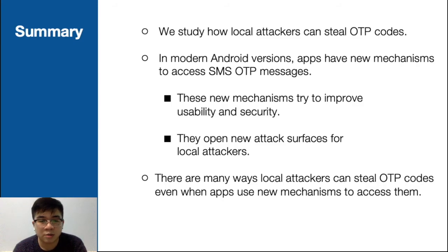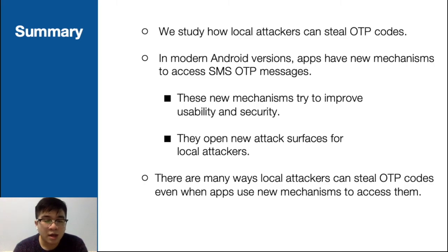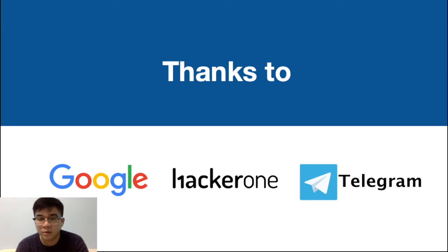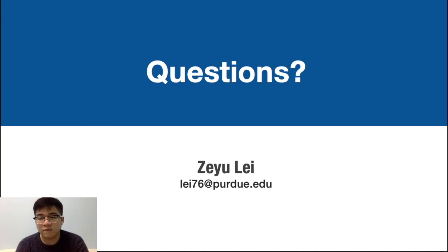To conclude, these are the main contributions of our work. We studied how local attackers can steal OTP codes. In modern Android versions, apps have new mechanisms to access SMS OTP messages — these new mechanisms try to improve usability and security, but they open new attack surfaces for local attackers. There are many ways local attackers can steal OTP codes, even when apps use new mechanisms to access them. We want to thank Google, HackerOne, and Telegram for the opportunity to discuss these topics and for the bug bounties they offered. In our paper you can find many more details — feel free to ask questions now or contact me by email. Thank you for listening.